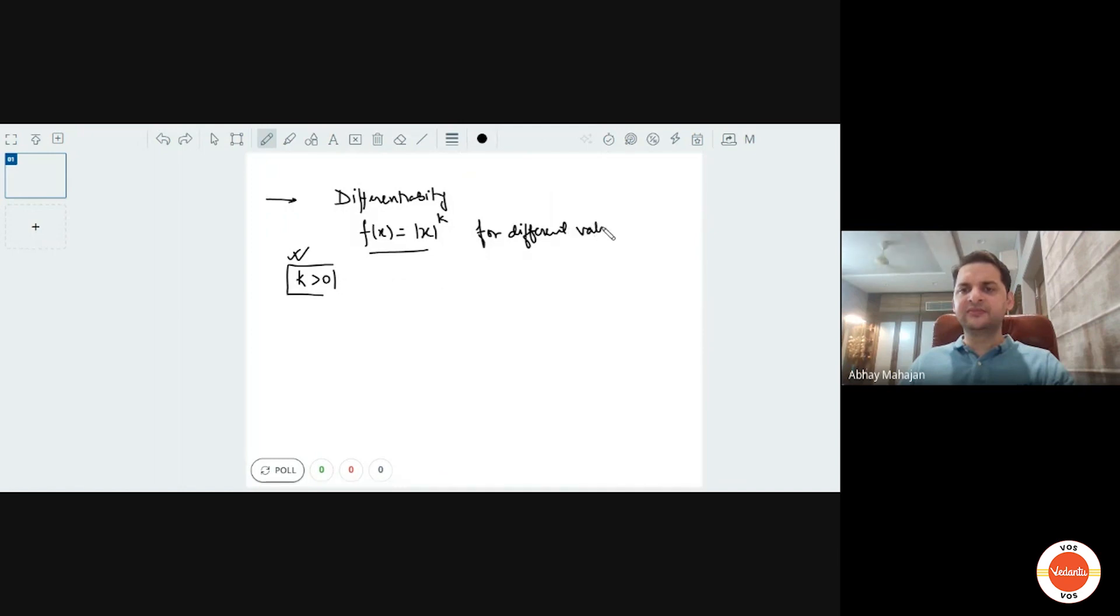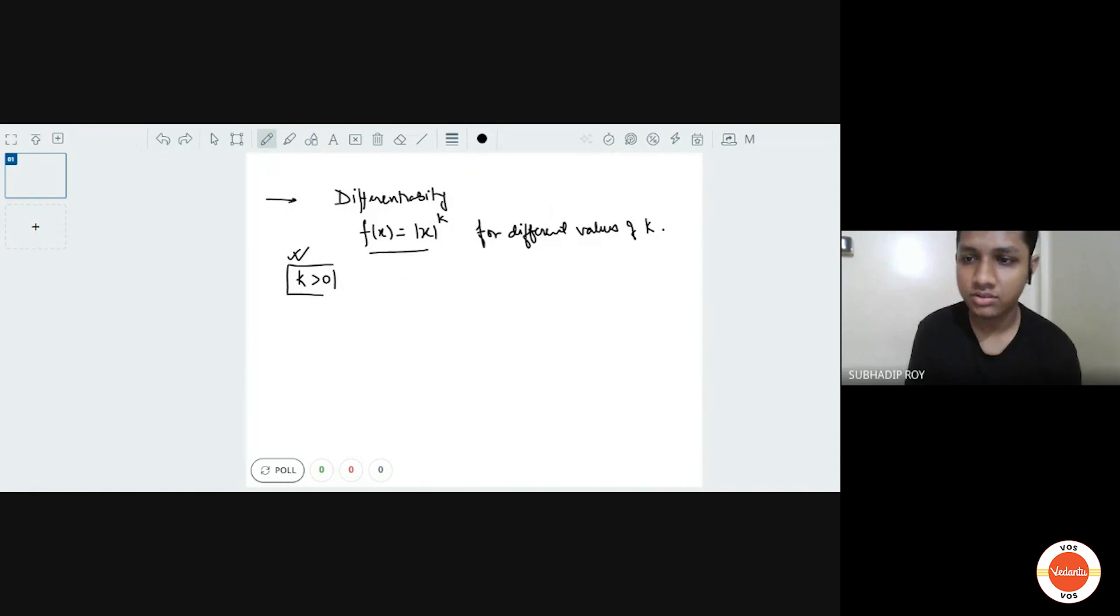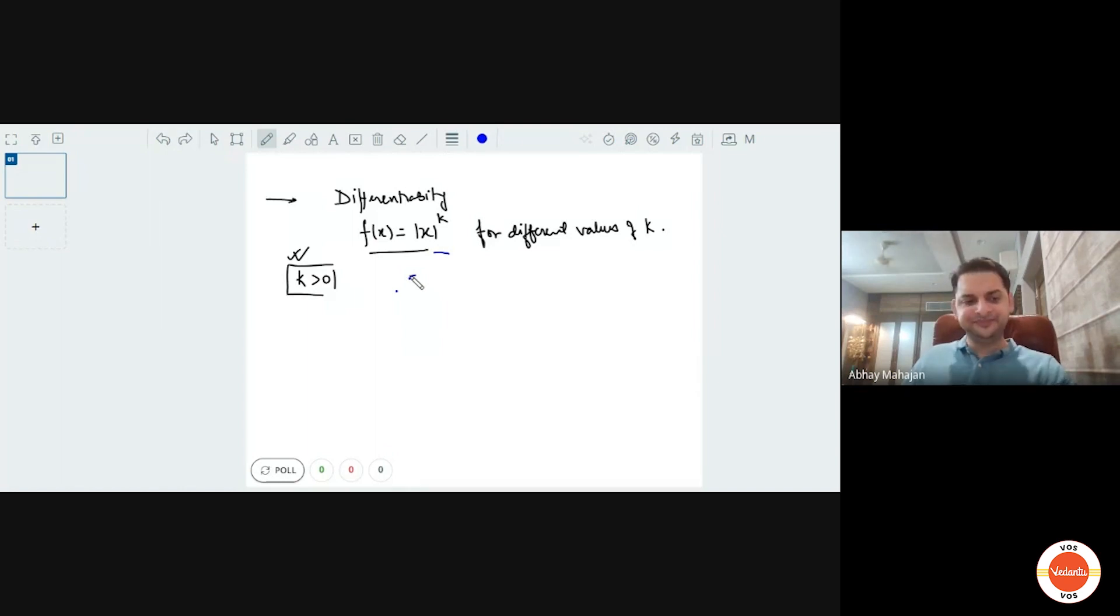Okay. So should I consider k as a whole number or something like that, or it can be like 0.1 fractions also? It can be 0.1, it can be rational also. Okay. Oh yes, sir. So I found that first I considered k as a whole number. So for k equals to 1, it is non-differentiable at x equals to 0 only. Okay. And for all k greater than 1, it is always differentiable everywhere if I consider it as a natural number. Okay.